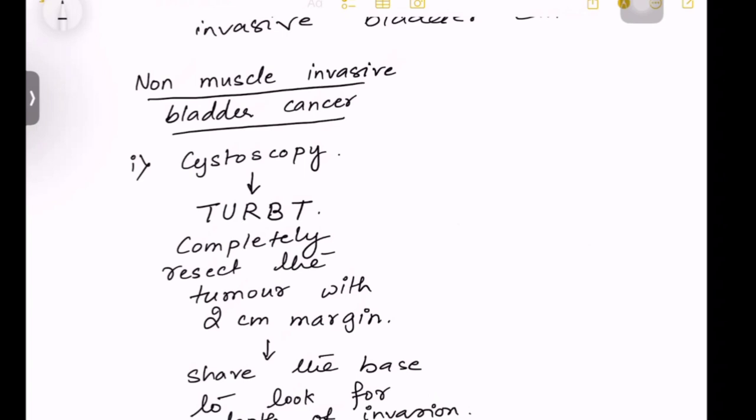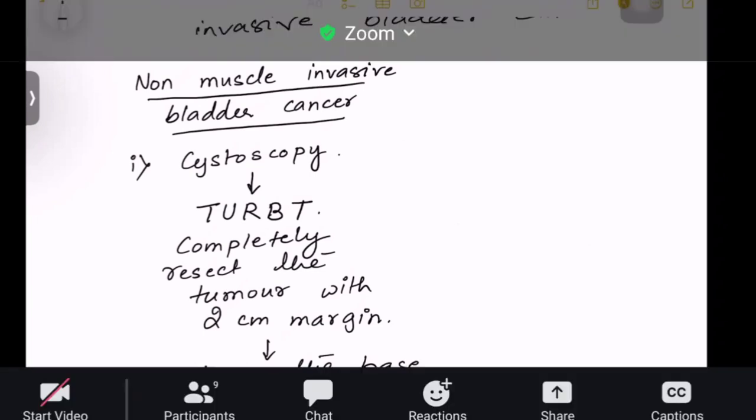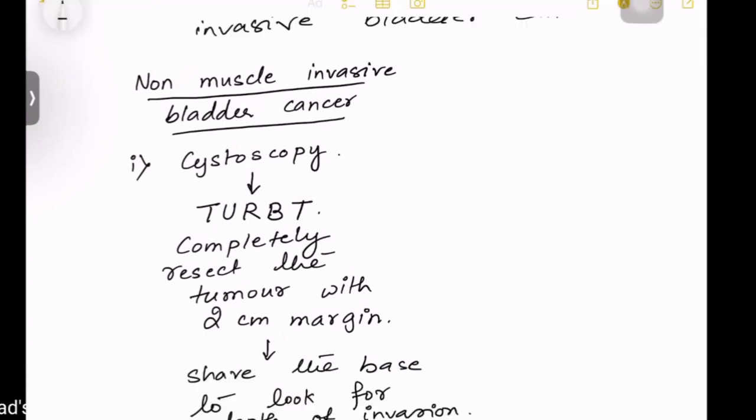There are two types of bladder cancer: non-muscle invasive bladder carcinoma and muscle invasive bladder carcinoma. Non-muscle invasive means the tumor has affected only the mucosal lining, not the muscle. The treatment is cystoscopy and then TURBT - transurethral resection of bladder tumors. You will resect with around 2cm margins of the tumor.